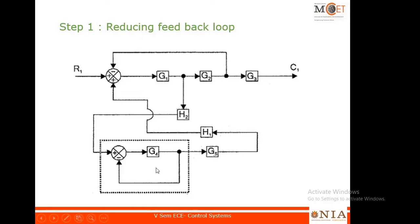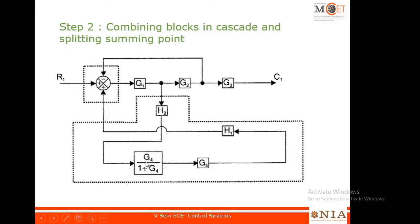Now we will start to reduce. Looking at this block diagram, you can see there is a small feedback loop, so it becomes G4 divided by (1 + G4·1), that is G4/(1 + G4) since there is unity feedback. After reducing it, you can see G4/(1+G4). Then from this point we have H2, G4/(1+G4), G5, and H1 — all cascaded — going to the summer.